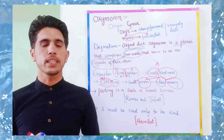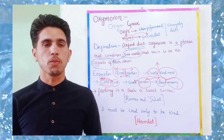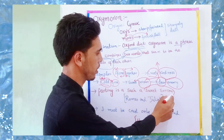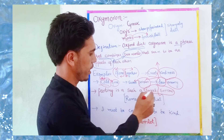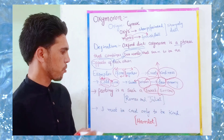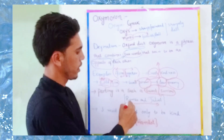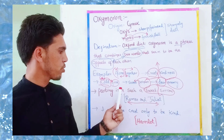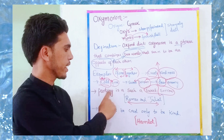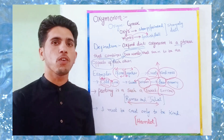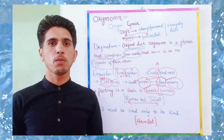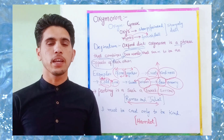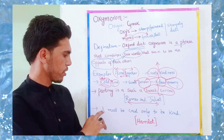Now looking at some literary examples of oxymoron. The first is 'parting is such a sweet sorrow,' taken from Romeo and Juliet written by the famous Shakespeare. You can see that parting is such a sweet sorrow — how could parting be a sweet sorrow? But it is used in order to create a dramatic effect by Shakespeare.